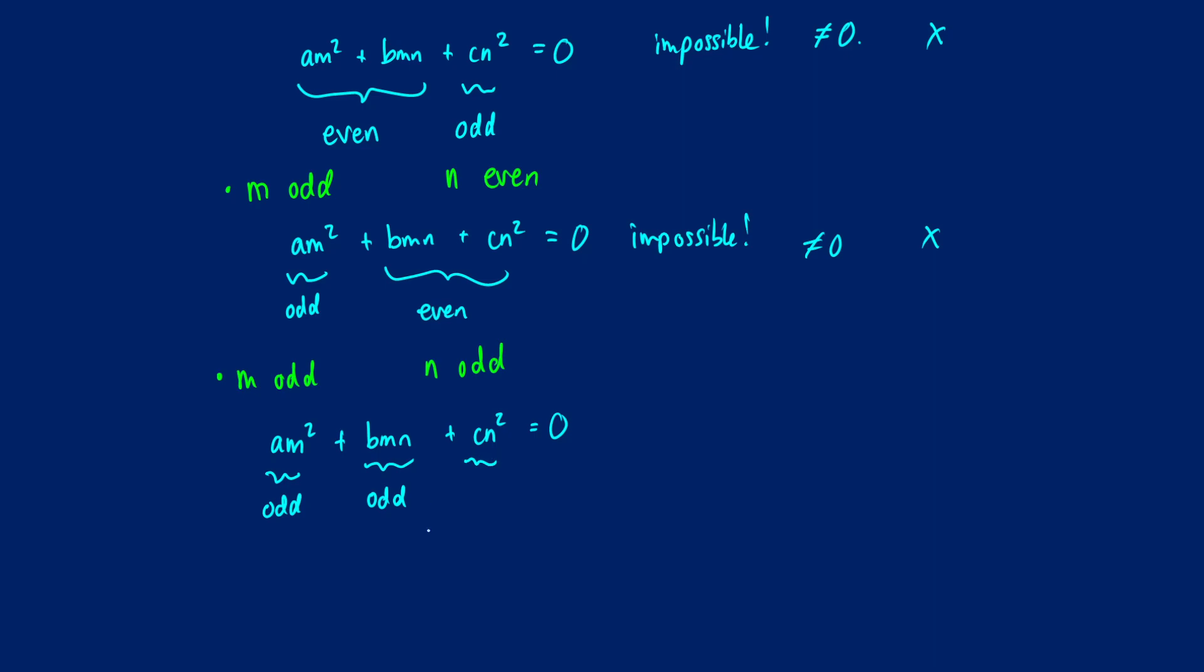Now c times n squared, n is odd, n times n is odd, so c times that will also be odd in this case. So all three of our numbers are odd. Now if we add three odd numbers together, we can get two of them to cancel out, but that third number isn't going to work. Our result is going to be odd.